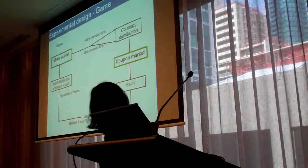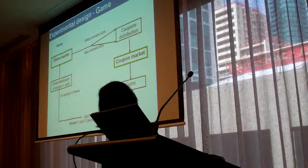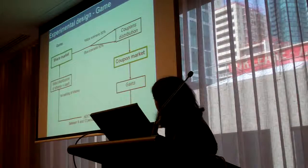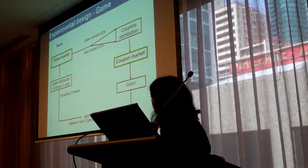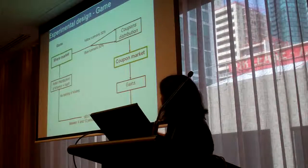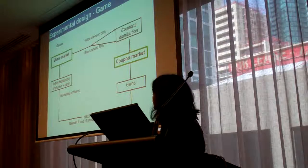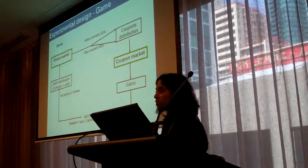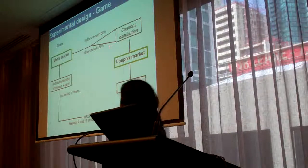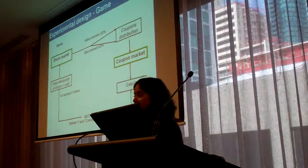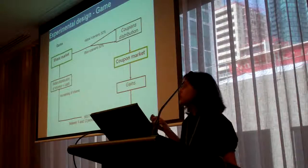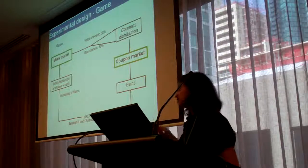This is what the market looks like. At the beginning of the trading period, subjects are given shares, and then they can trade in the share market. Once they have finished trading in the share market, they get to know whether they are in the yellow scenario or the blue scenario. The yellow scenario represents a dry season, and the blue scenario represents a wet season. In the yellow scenario, you get three times less water compared to the blue scenario.